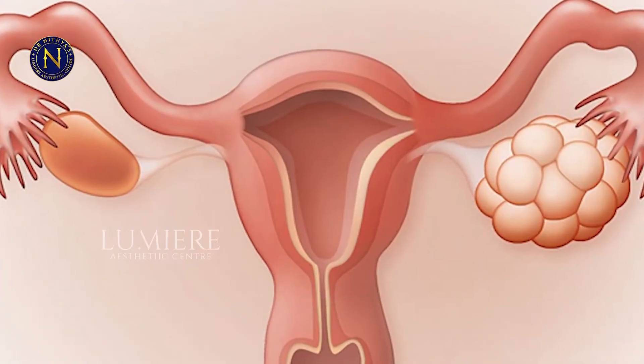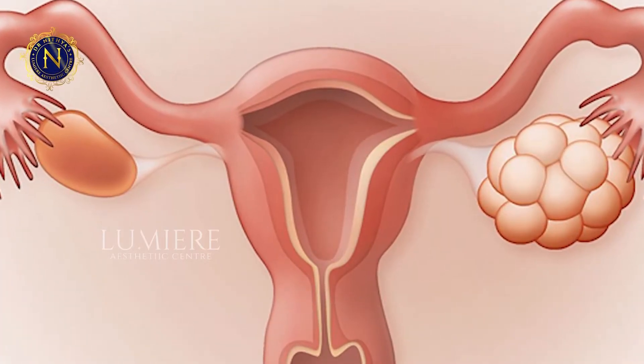For PCOS, we perform a hormone evaluation. For Cushing syndrome, we refer the patient to an endocrinologist. At Lumiere Aesthetic Center, we have specialized treatment for hirsutism.